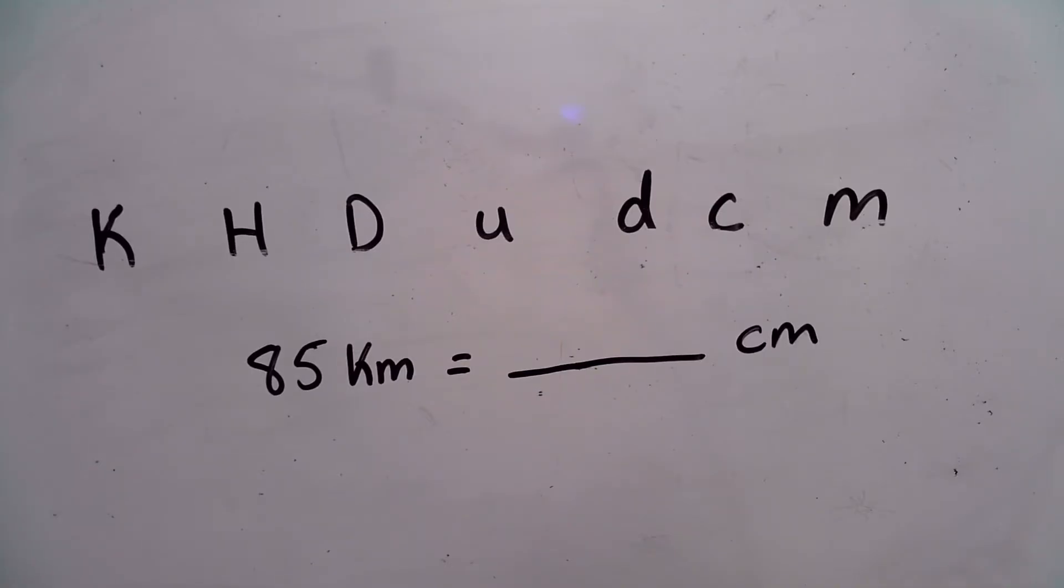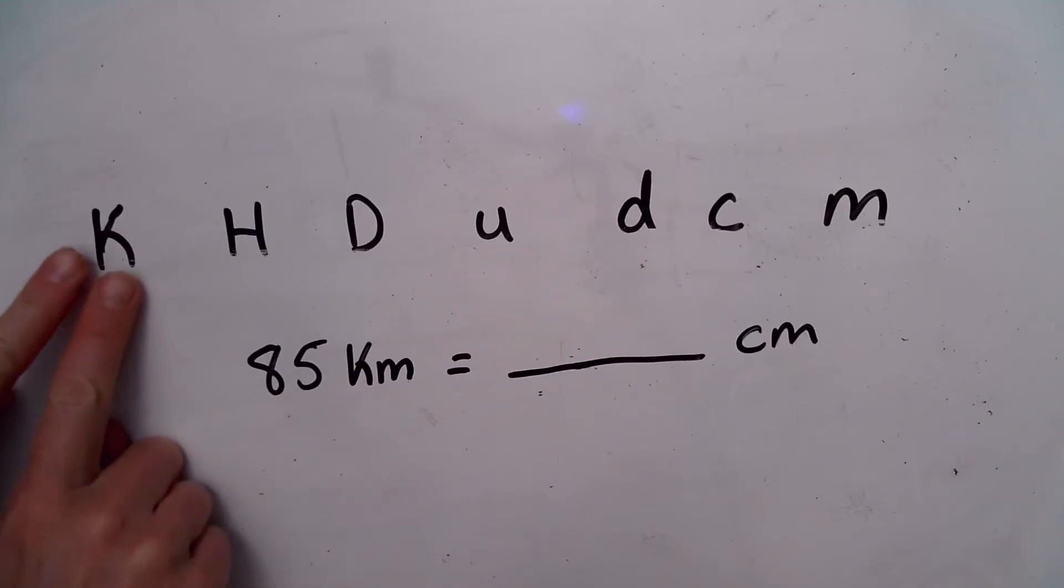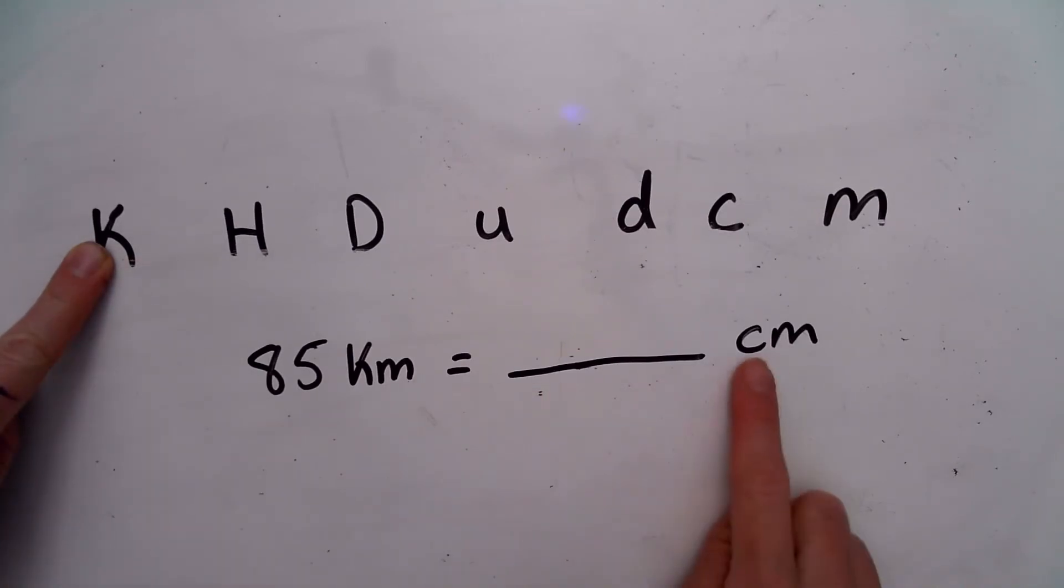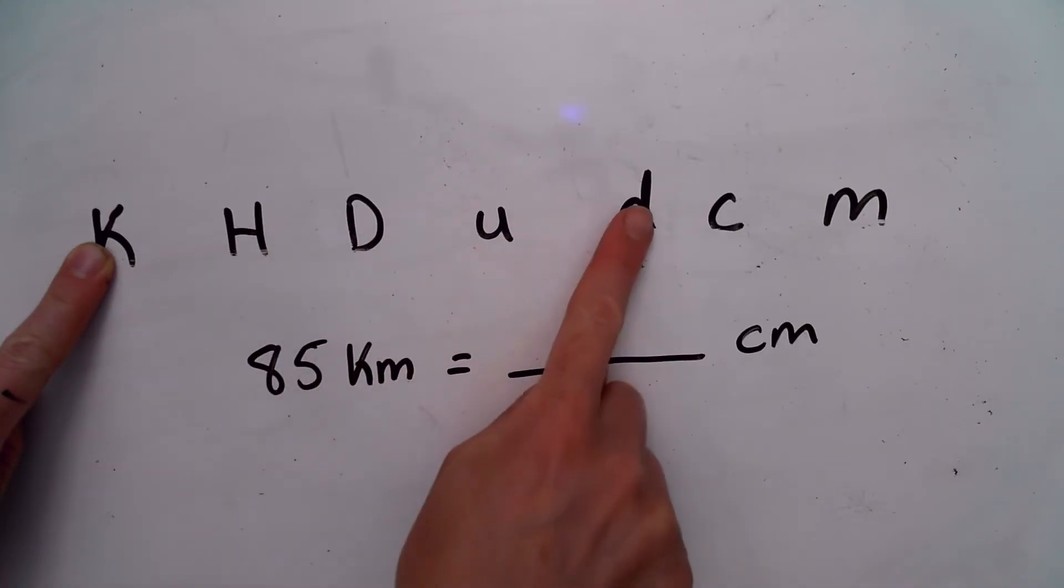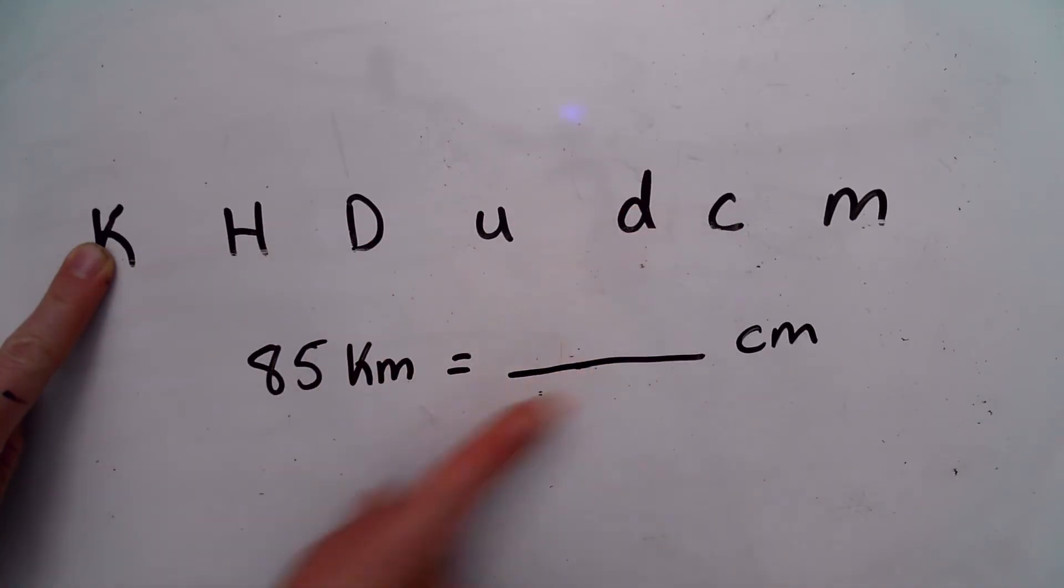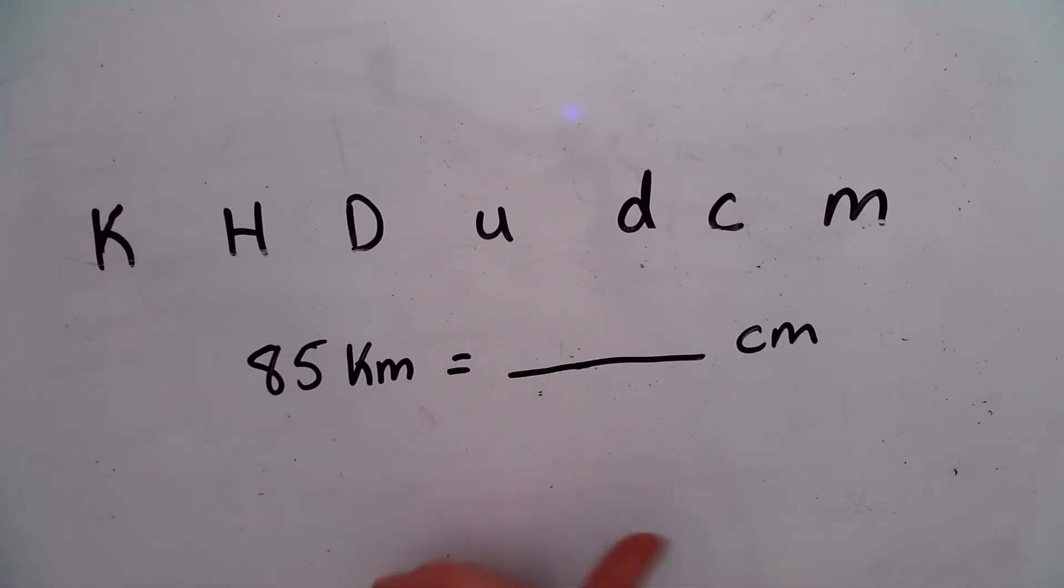So let's say this was the problem you were trying to solve. 85 kilometers equals how many centimeters? So your first step is to take two fingers and put them right on your starting unit. So I'm starting with kilo. And then I'm going to move one finger towards my ending unit, which is centi. One, two, three, four, five times I move my finger in that direction.